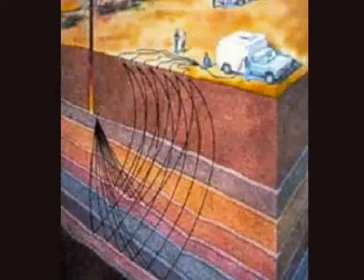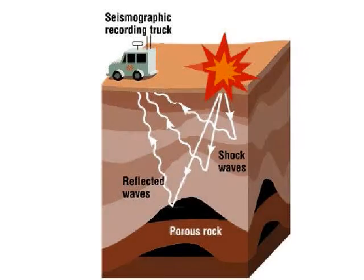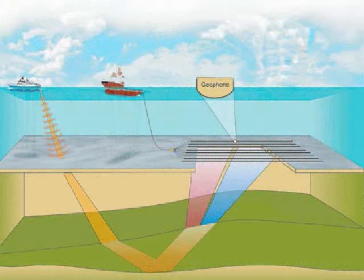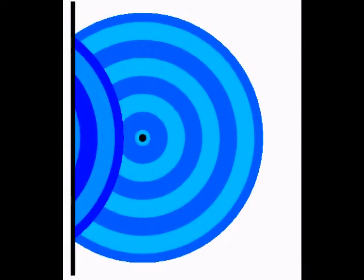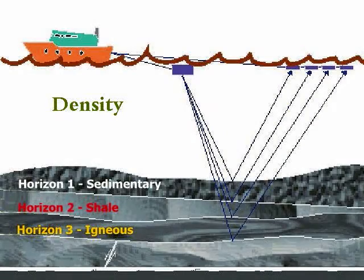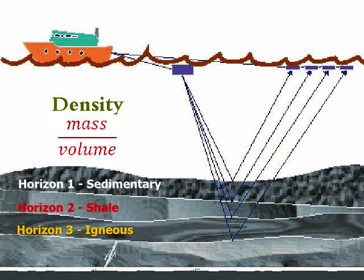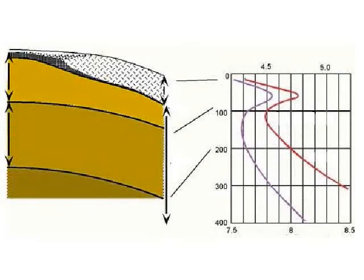We measure the travel times of these waves as they bounce off the Earth's underground structures. Sound waves are affected by four properties when they pass through air, fluid, or rock — these are the properties that influence seismic wave propagation, or velocity. The first property is density, or mass divided by volume. For example, sound passes through hard rock faster than soft rock.